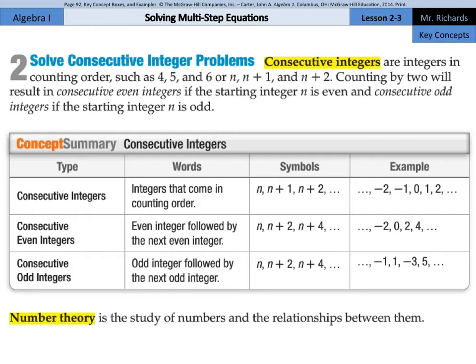So, as you can see for consecutive integers here, integers that come in counting order such as negative 2, negative 1, 0, 1, 2, but in symbols, this is n, n plus 1, n plus 2. Consecutive even integers, even integer followed by the next even integer, very similar to consecutive odd integers. The key is what your n is starting as. If it starts even, we're going to stay even. If it starts odd, we're going to stay odd.